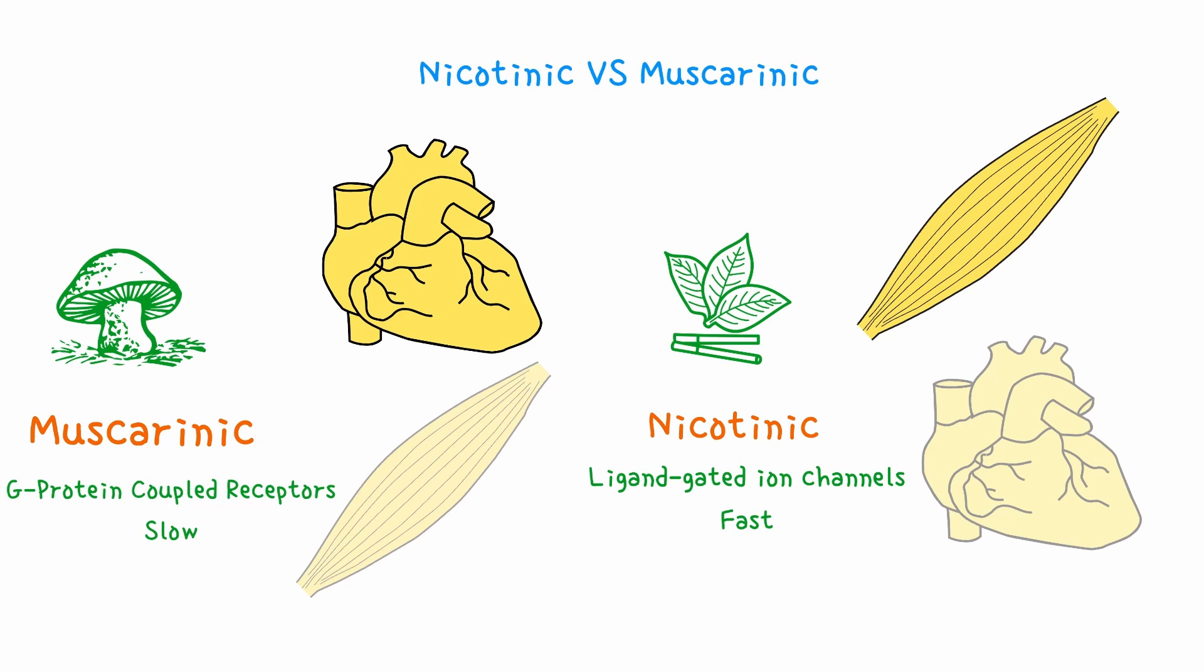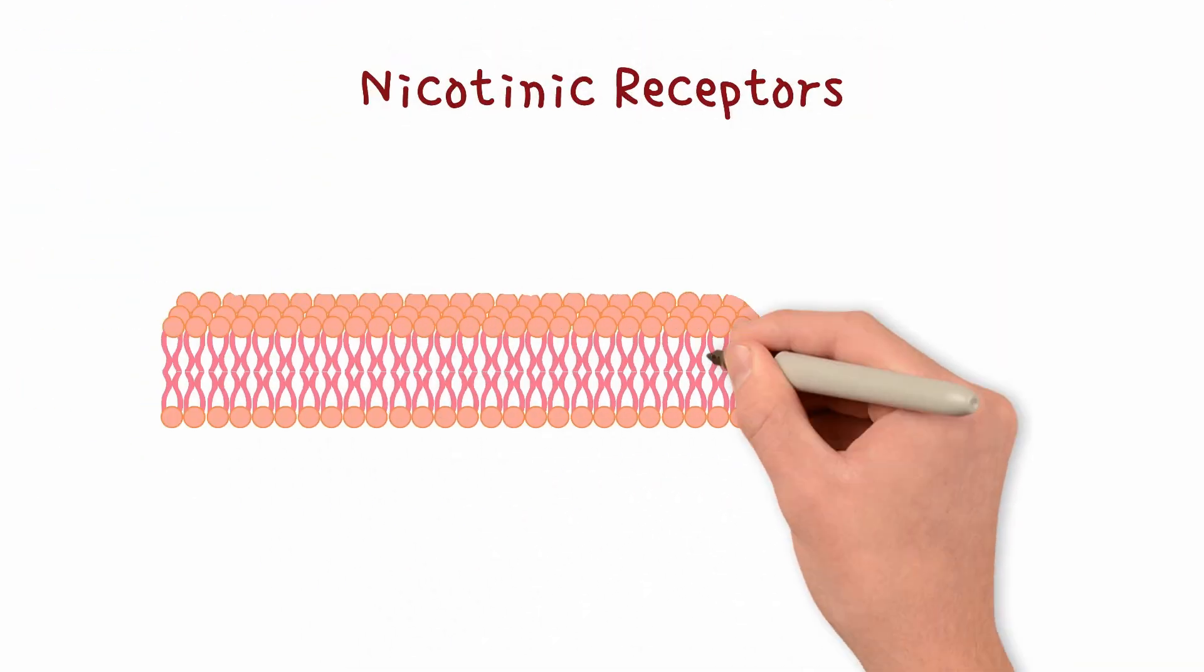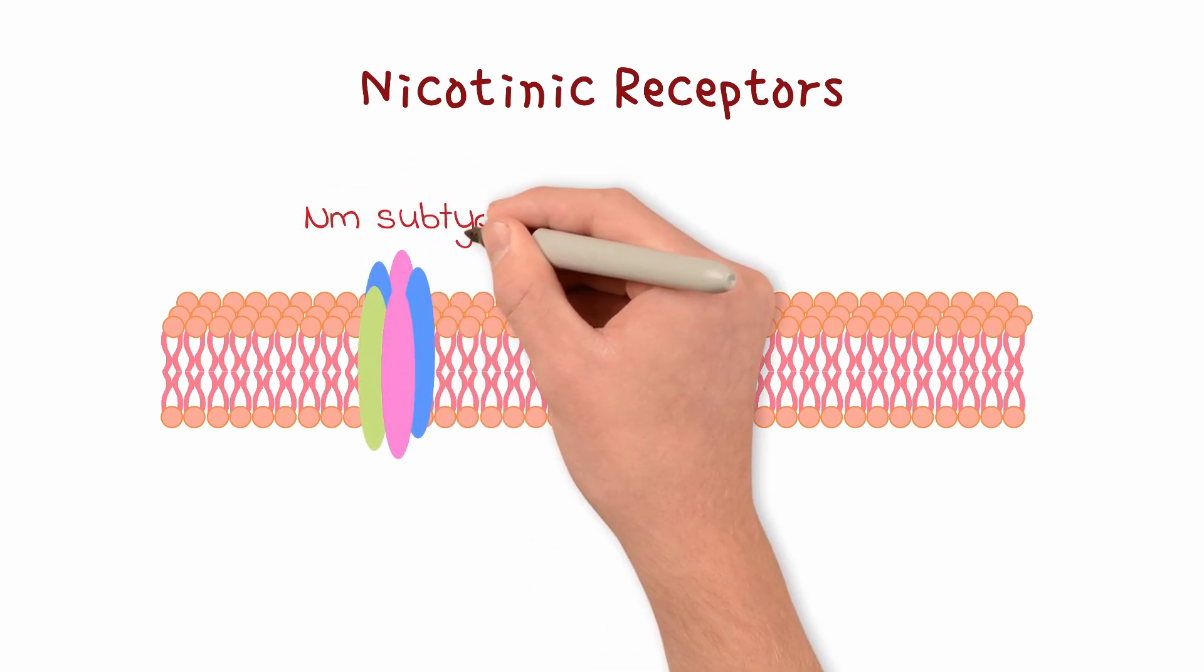Together, muscarinic and nicotinic receptors make up a significant percentage of drugs. Nicotinic receptors are divided into two types based on location, NM and NN.